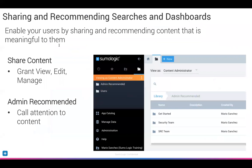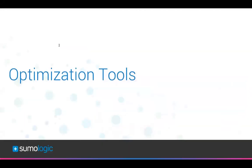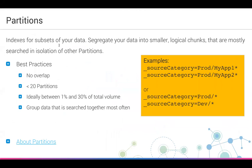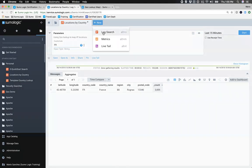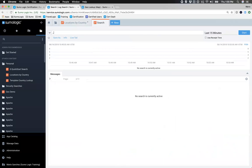In summary, you have many different ways of sharing and recommending content — search templates, shared dashboards, and admin-recommended folders. This is one of the best things you can do for your users, especially as you get ramped up. Now for the last roughly 10 minutes, let's talk about optimization tools. Some of these you might already be doing; some you might not need for a couple of months. Let me start with field extraction rules. What they do is allow you to parse fields ahead of time instead of parsing them at query time.